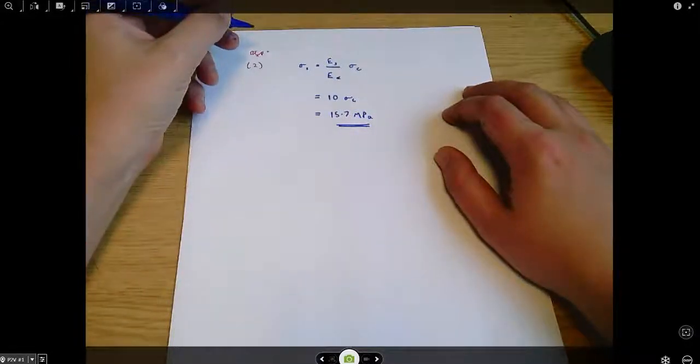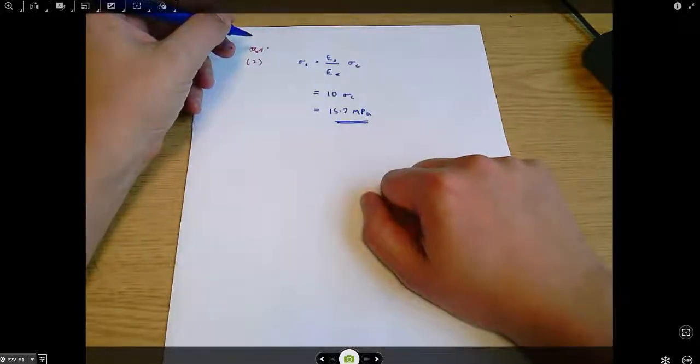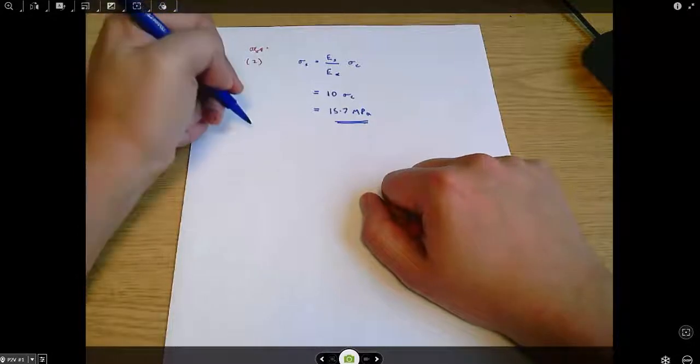So we've got the stress in the steel and the stress in the concrete. And we want to know if the length of the column is 4 meters, how much does it shorten? That's part B.